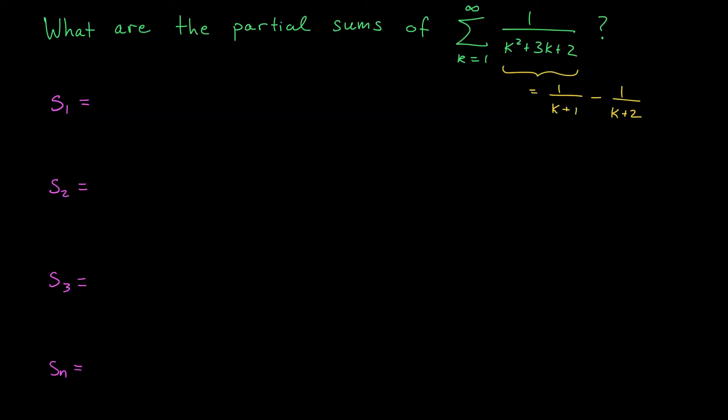Okay, we're now ready to find the partial sums of our series. I'm going to start by computing the first few partial sums, s1, s2, s3, and then we'll move on to the general partial sum, sn. So let's begin by looking at s1. By definition, s1 is going to be the sum of the first 1 terms of our series. So really, it's not much of a sum at all. It's just our first term.